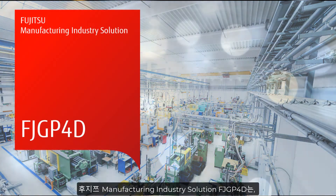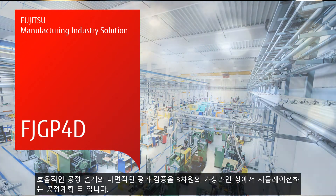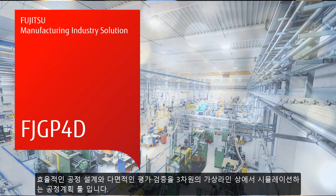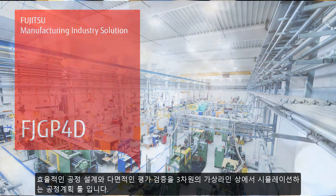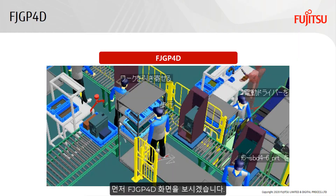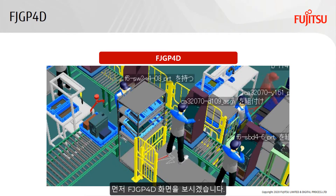FJGP4D is a process planning tool that simulates efficient process design and multifaceted evaluation on a three-dimensional virtual production line. Take a look at the FJGP4D simulation.